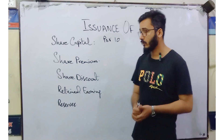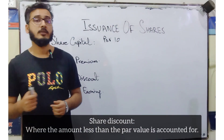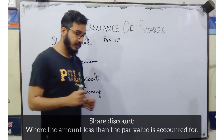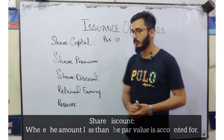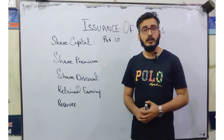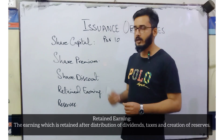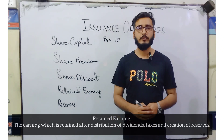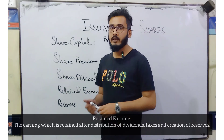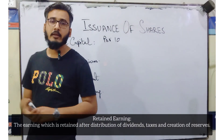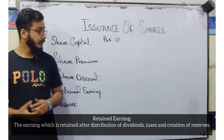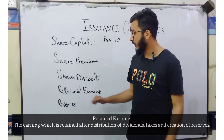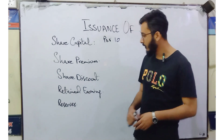Share discount means that when the share is sold less than the par value of 10, then the difference amount shall be pooled into the share discount account. Retained earning means the earning which is retained by the company for other purposes — what is left over after distribution. From income, you pay dividends and taxes, and whatever amount is left over, the company keeps it for other purposes. That is retained earning.